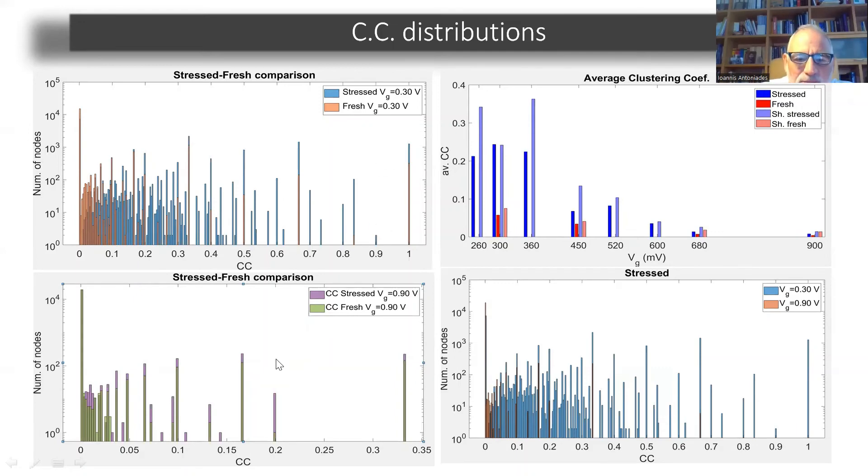And if you look at the plot below that, this is again stressed and fresh transistor comparatively for different gate voltage 0.9 volts. And here you see the difference in the clustering coefficient is not so pronounced. So in the lower gate voltage values, clustering coefficient can distinguish between stressed and fresh transistor.